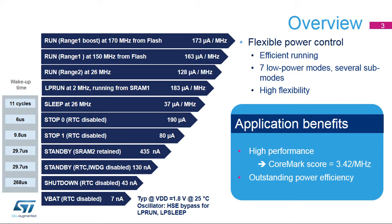STM32G4 devices support seven main low power modes: low power run, sleep, low power sleep, stop zero, stop one, standby and shutdown modes. Each mode can be configured in many ways, providing several additional sub-modes. In addition, STM32G4 devices support a battery backup domain called VBAT. The high flexibility in power management provides both high performance with a CoreMark score of 3.42 per MHz together with an outstanding power efficiency.